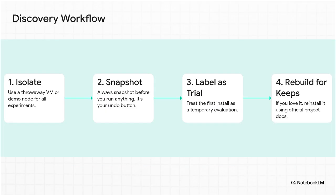First, and this one is not optional: use a throwaway VM, a demo node. Keep your experiments isolated. Second, always take a snapshot before you run a single thing — it is your magical undo button. Third, just mentally label this thing as a trial. And finally, if after a week or two you're like, wow, I actually love this thing — that's your cue to rebuild it the right way, for keeps.